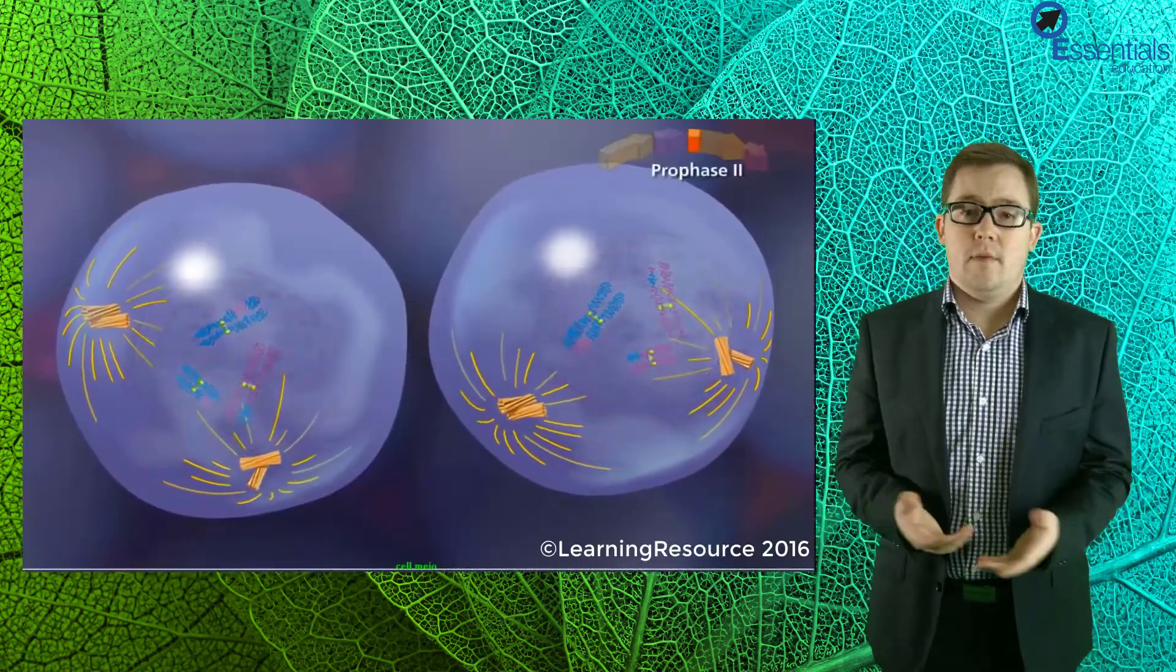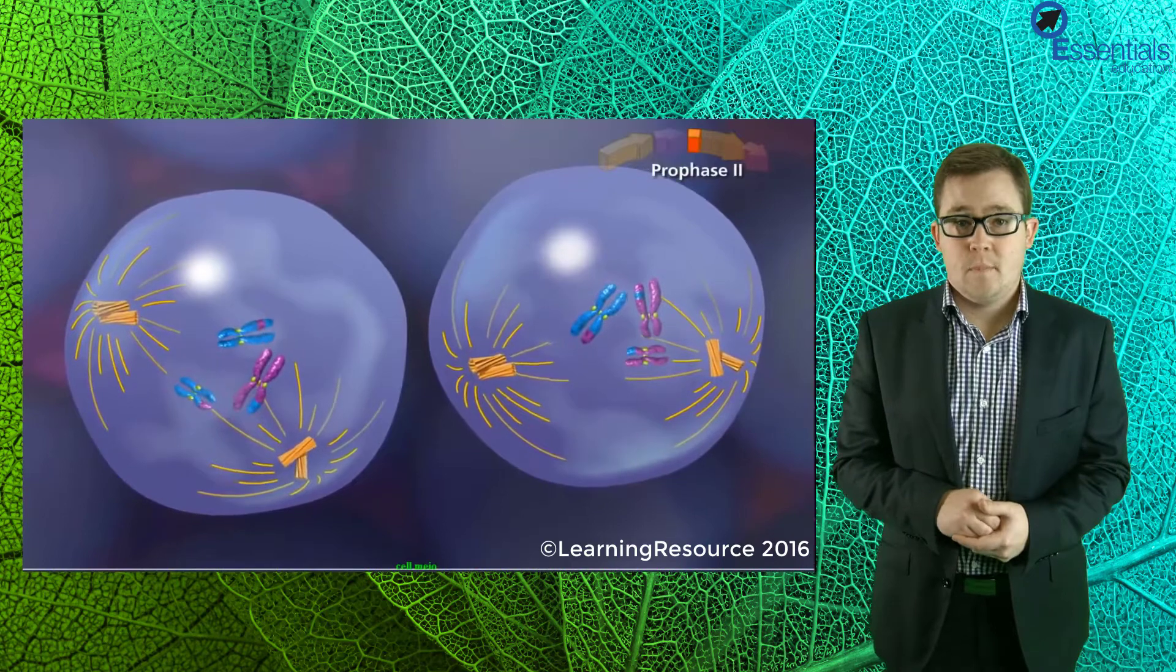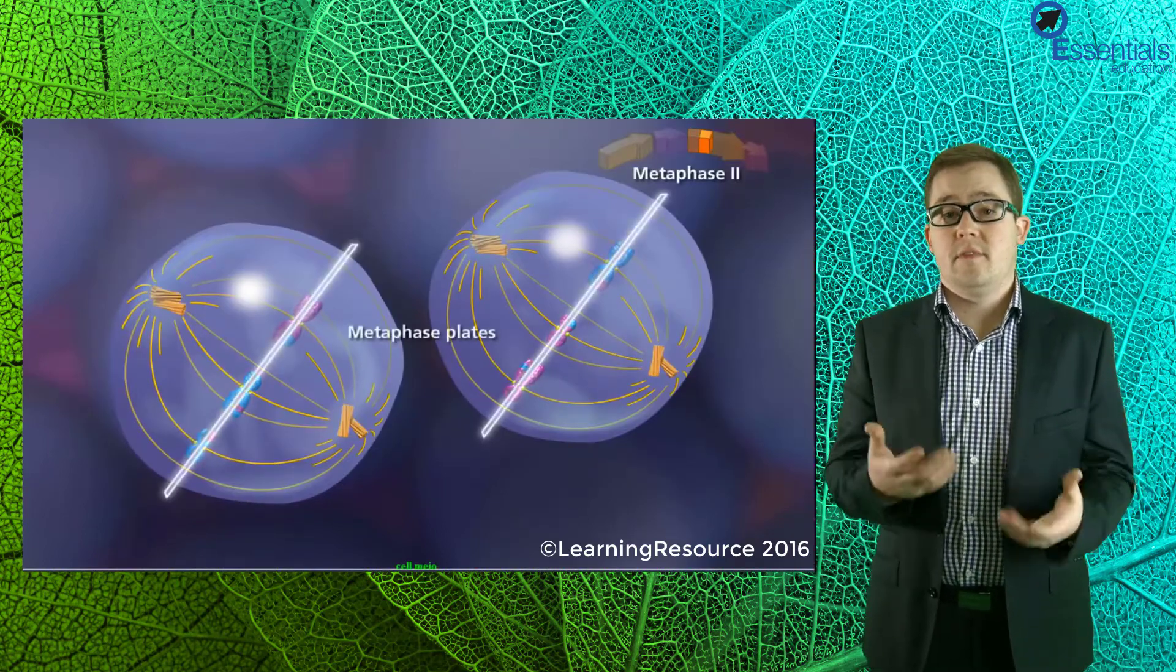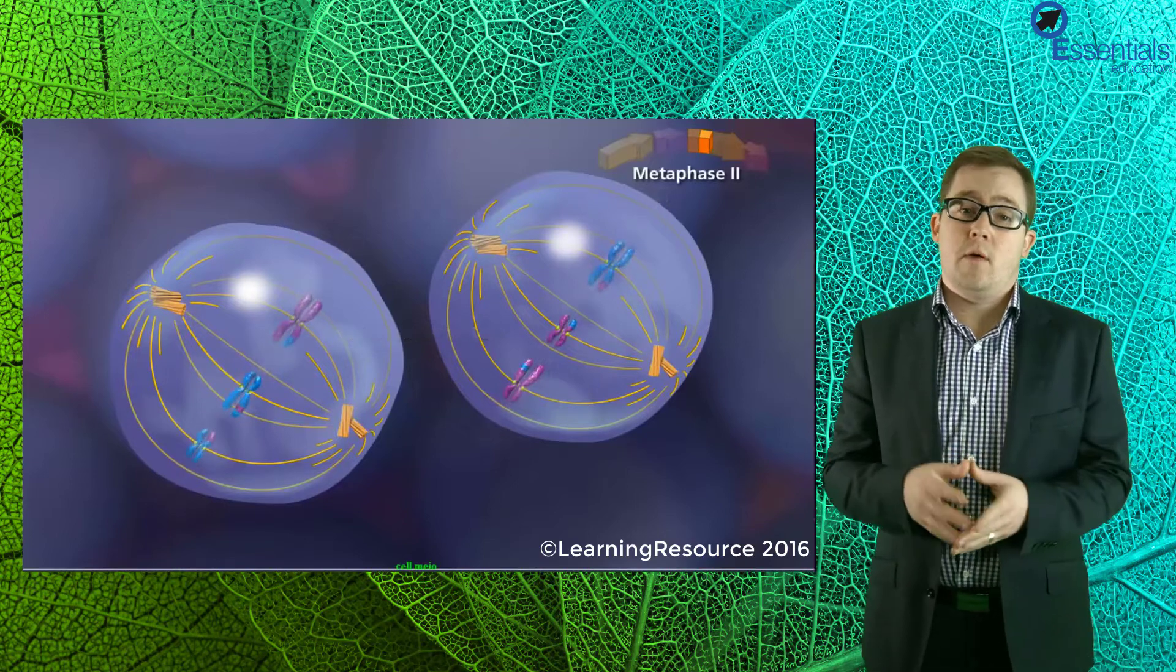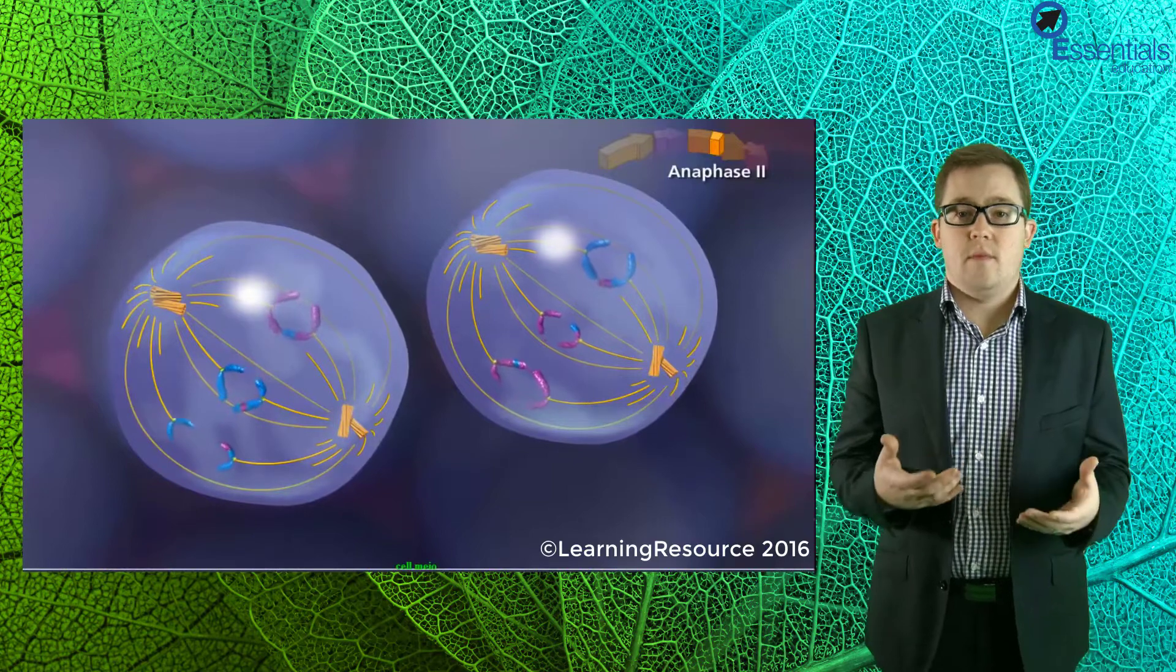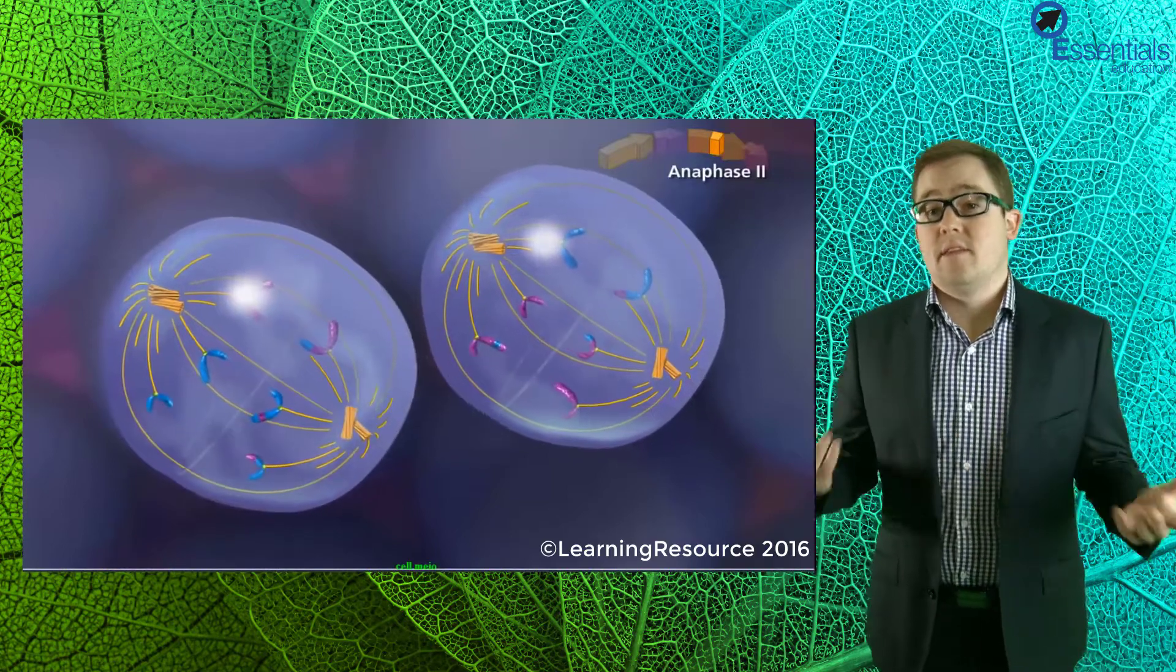In prophase II, the chromosomes condense again. In metaphase II, the chromosomes each consisting of two identical sister chromatids move to the middle of cell in one line. In anaphase II, the sister chromatids of each chromosome are separated and move to opposite ends of the cell.